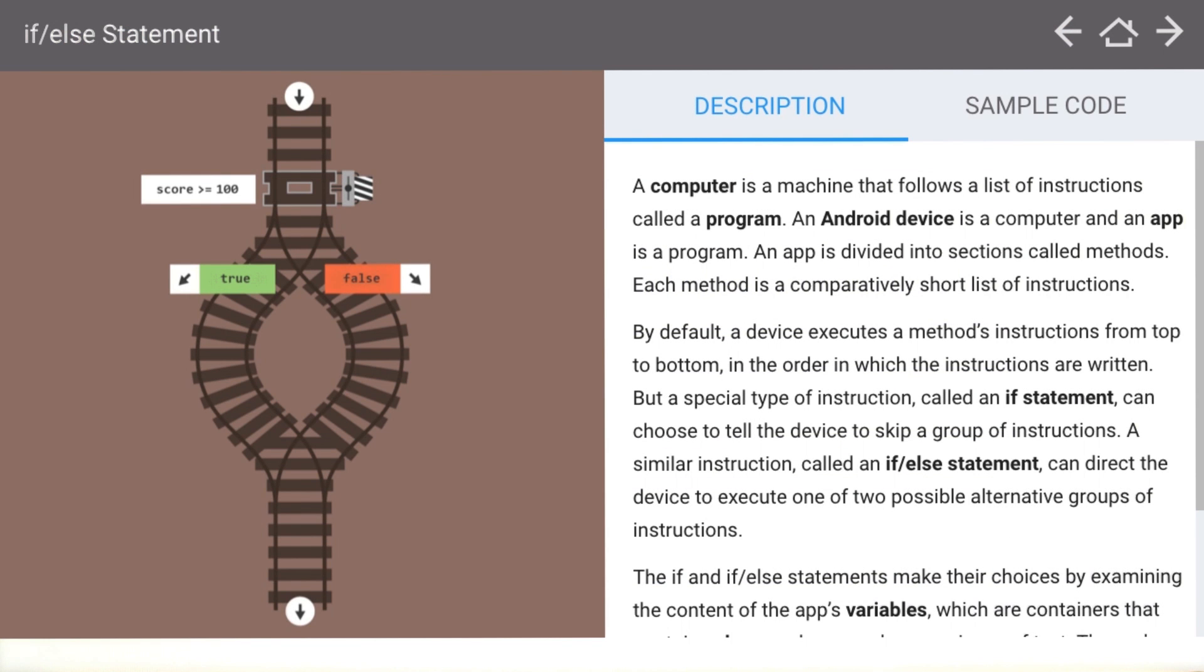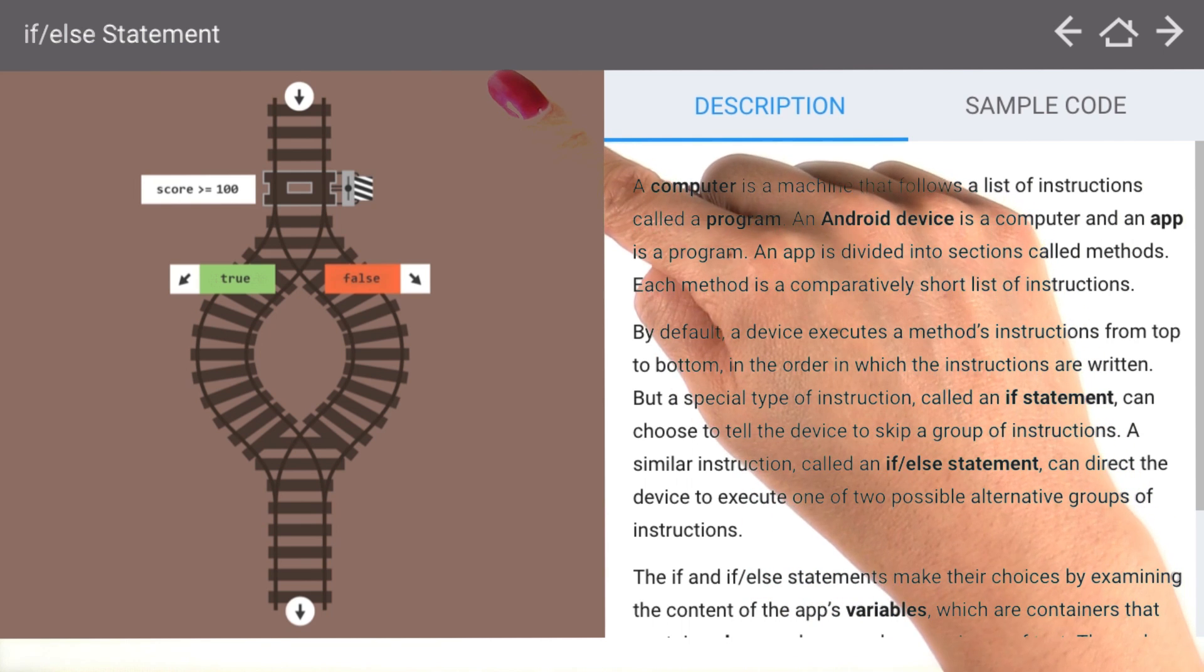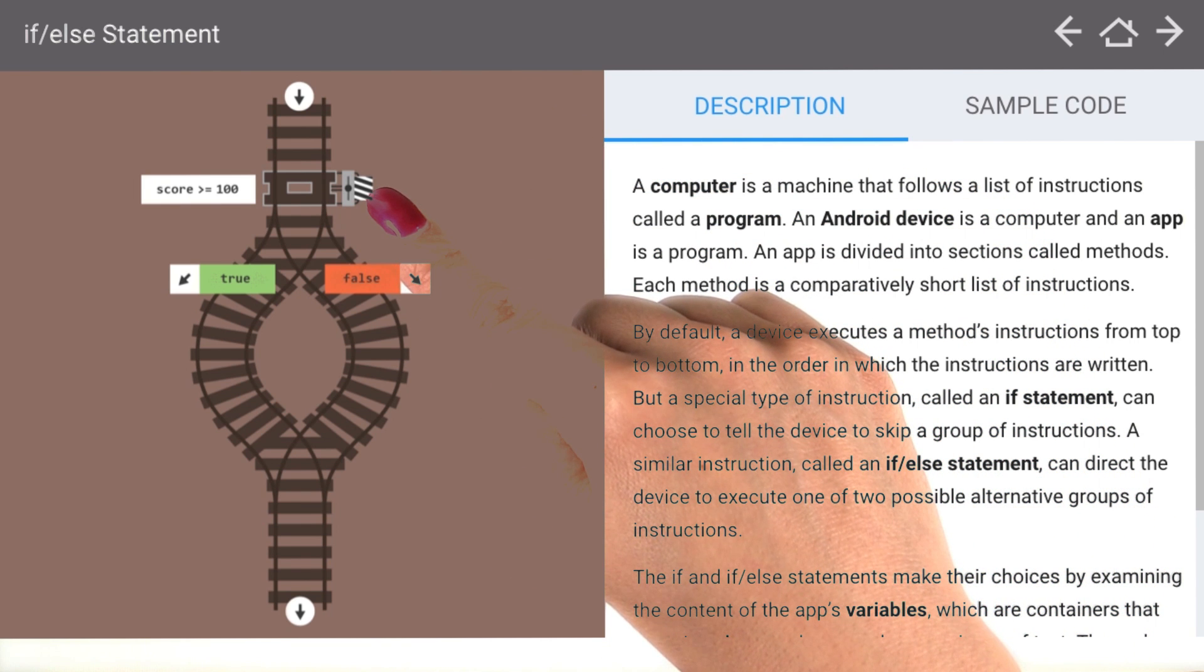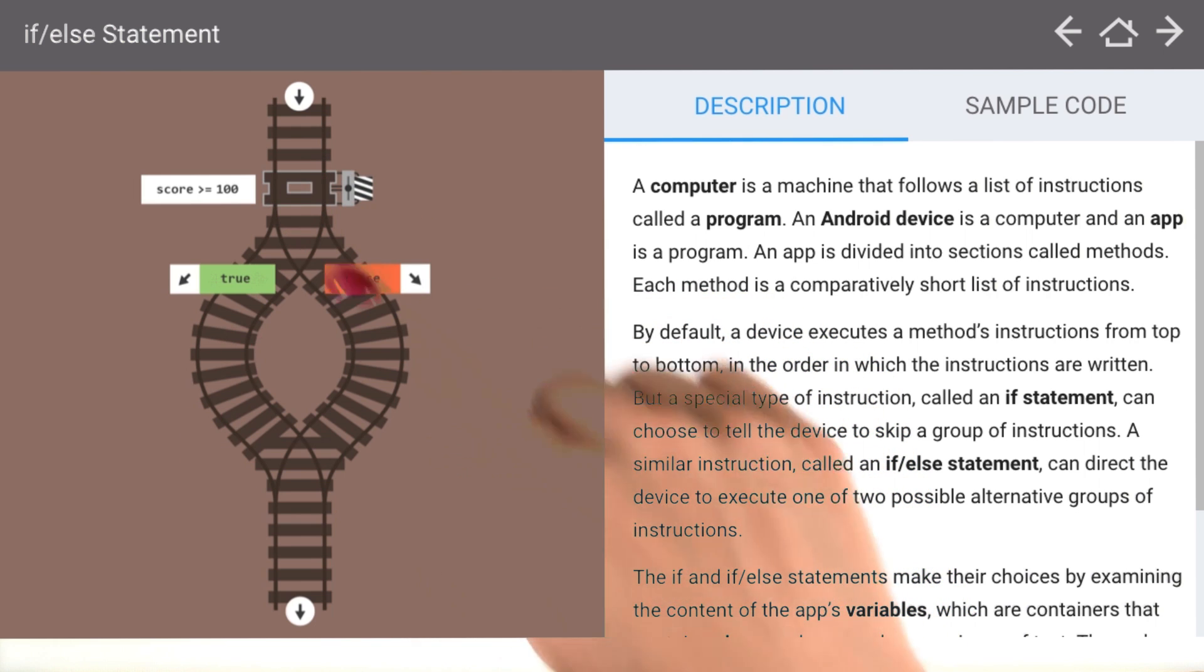Looking at our vocab word glossary, we can look up the phrase if-else statement. One way to think about this is to use an analogy of a train track. A train track has a switch so that given a certain condition, the train will go one way or the other. Similarly, in the if-else statement, if this condition is true, then we'll execute one path of code. If the statement is false, then we'll execute a different path of code. And then afterwards, we're going to resume the normal flow of code.